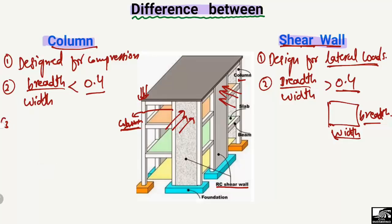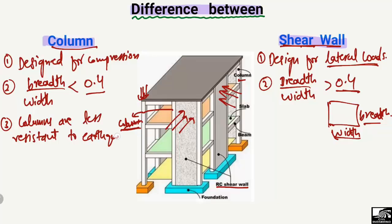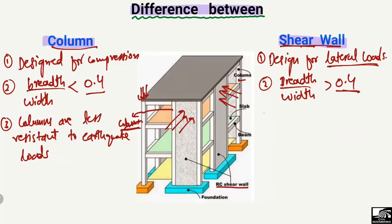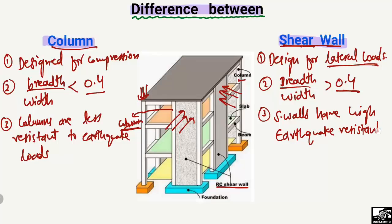The third main difference is that columns are less resistant to earthquake loads or lateral loads, while the main purpose of providing shear walls in a structure is that they increase the lateral capacity of the structure. Shear walls have high earthquake resistance. So shear walls are mostly designed to take the earthquake load, while columns are less resistant to earthquake loads because of their geometry.